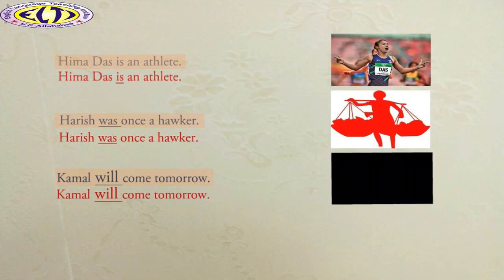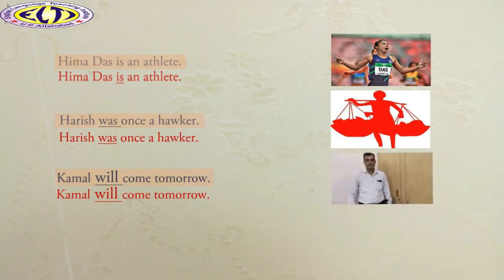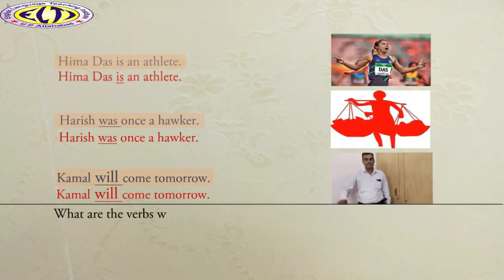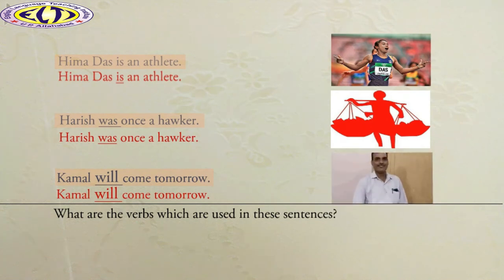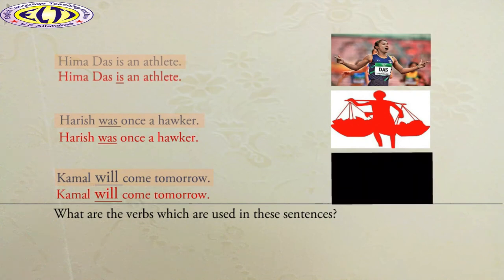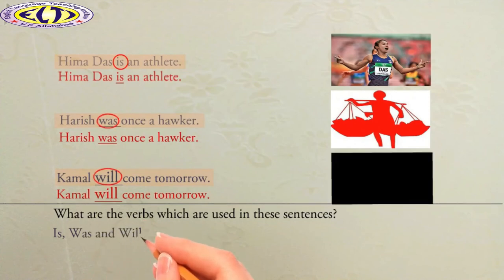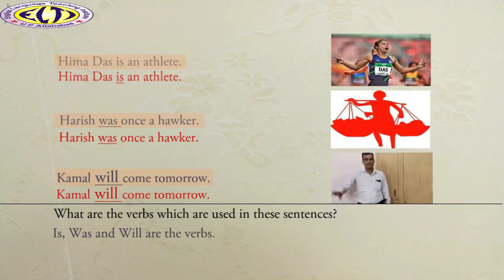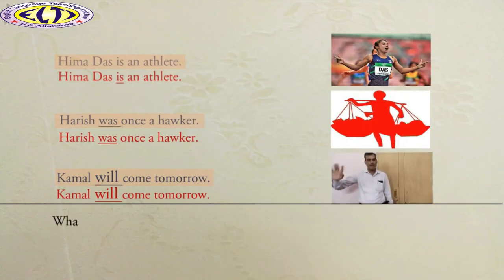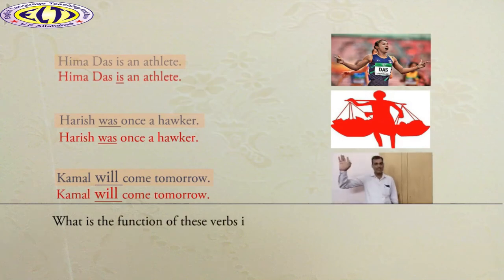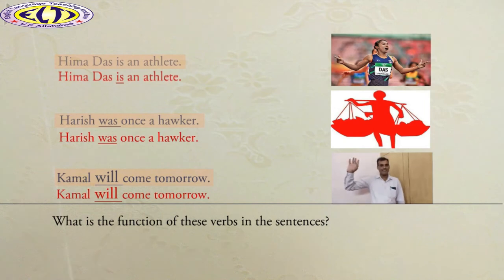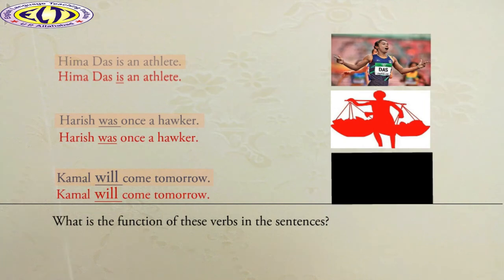Now, answer the questions on the basis of these sentences. What are the verbs which are used in these sentences? Yes, in these sentences, is, was, and will are the verbs. The next question: what is the function of these verbs in the sentences? You don't know? I will tell you.